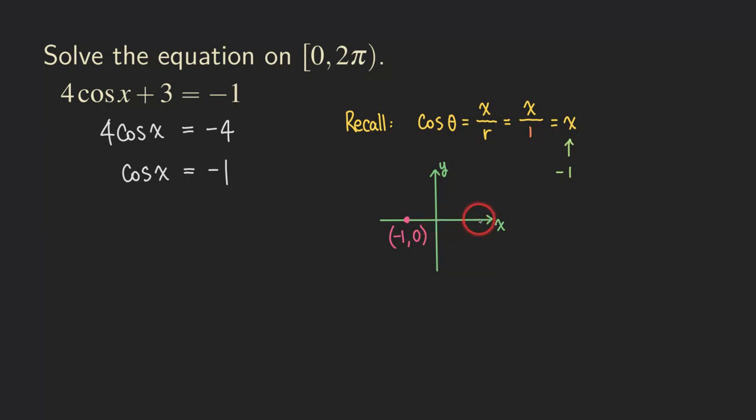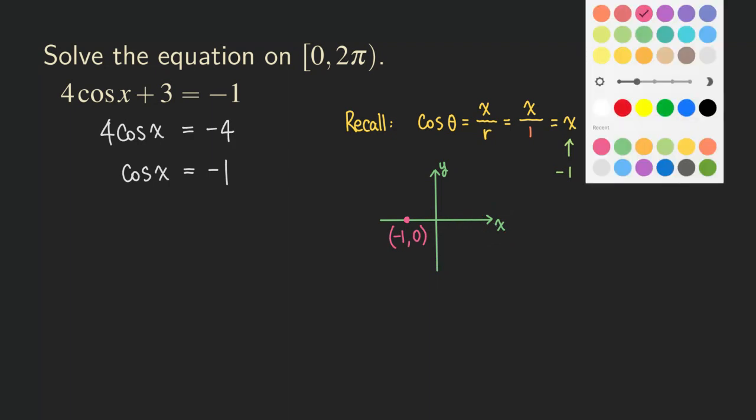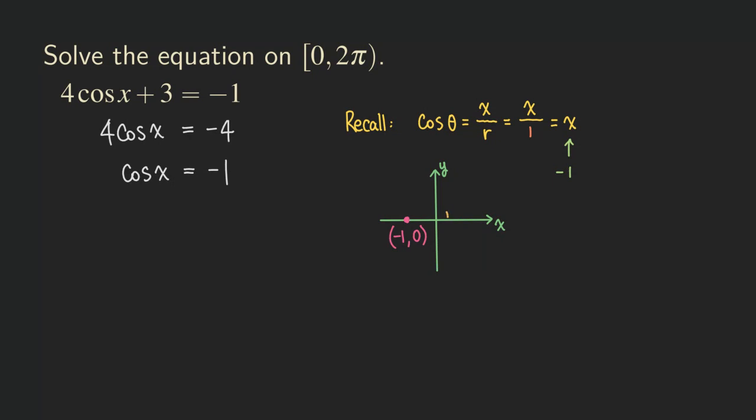If this point is lying on the terminal side of the angle that you're forming with the positive x-axis, that's really just saying that our angle is this angle here. What is this angle? This is the angle 180 degrees.